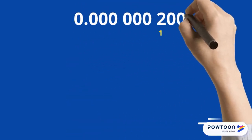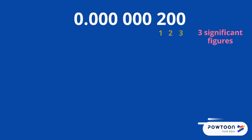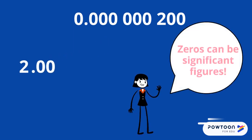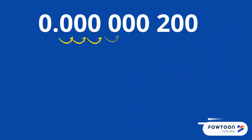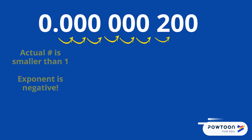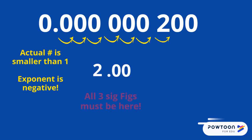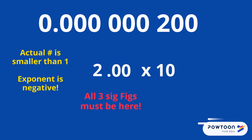Let's try converting this number. There are three significant figures in this number, the first of which — the 2 — is written before the decimal place, and the others are after. Recall that all significant figures need to be represented, and sometimes zeros are significant. The decimal needed to be moved 7 places, and since our actual number is smaller than a whole number, the exponent is negative. Therefore, the number in scientific notation is 2.00 times 10 to the negative 7.